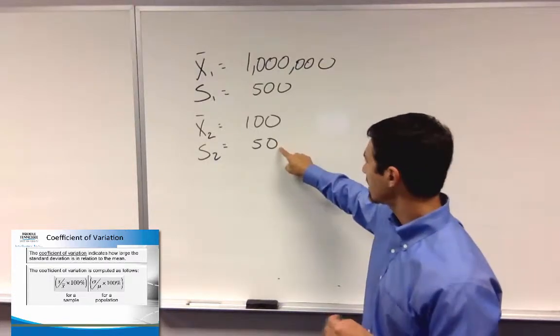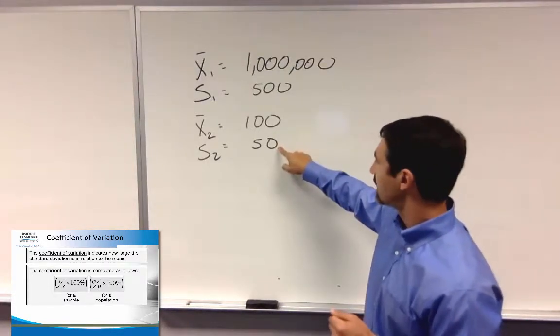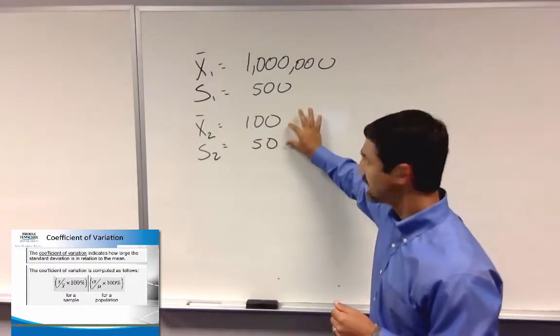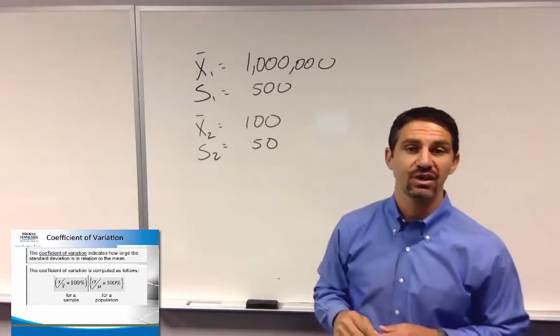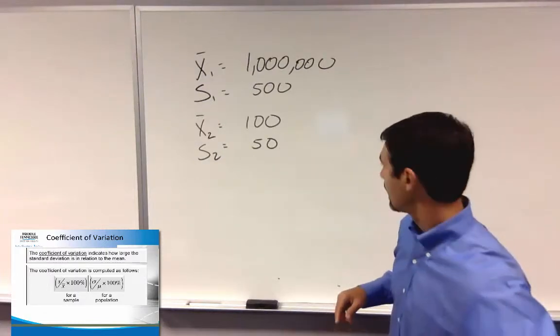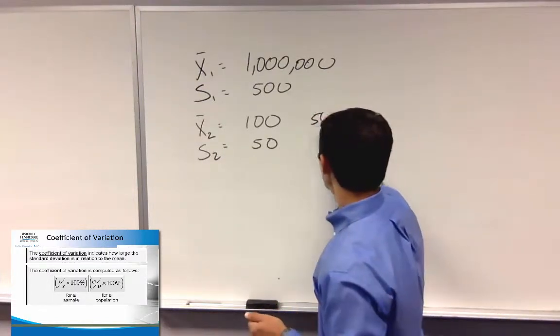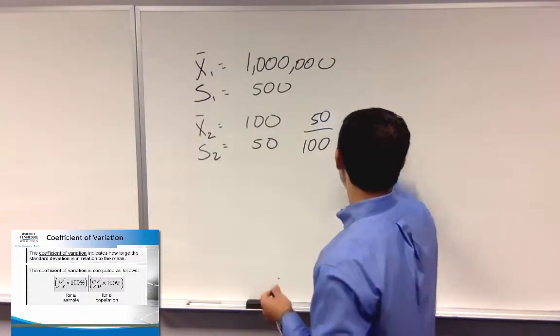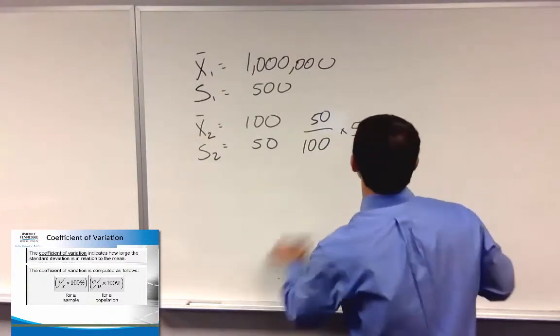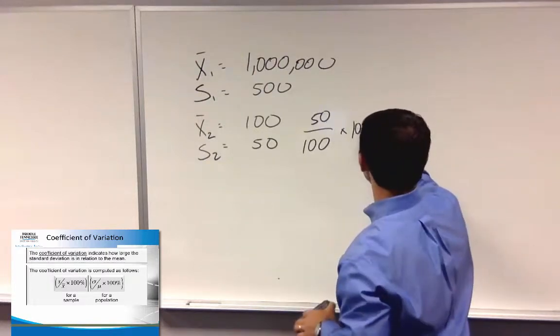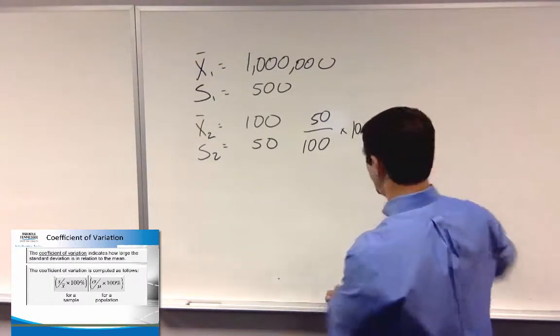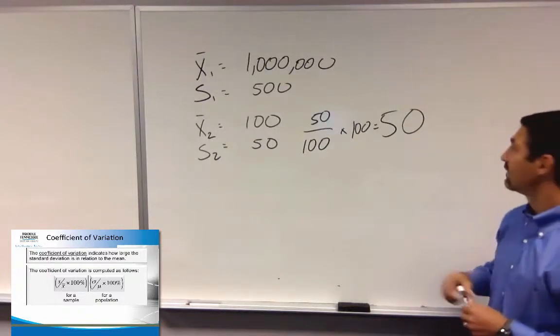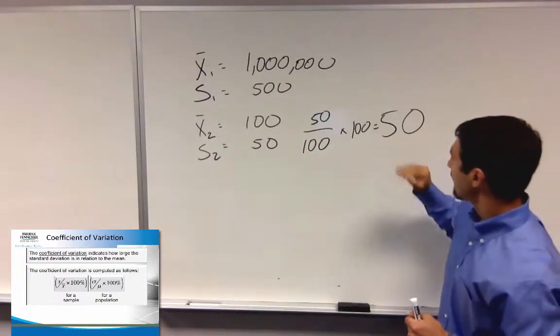It varies by the standard deviation is 50 in this case, but the sample mean is only 100. So in this case, you have a coefficient of variation of 50, because it's 50 divided by 100 multiplied by 100, gives you that 50.